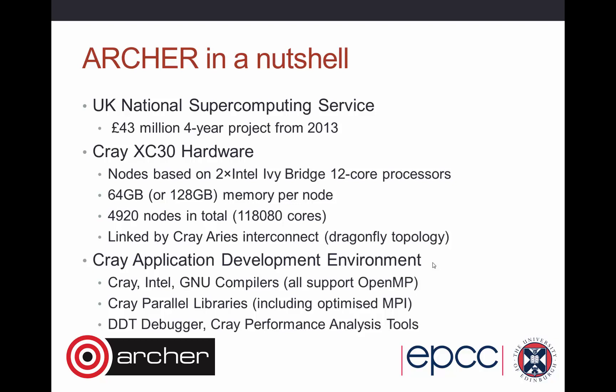In a nutshell, what is Archer? Archer is the UK National Supercomputing Service, and the hardware budget is about just over £40 million over a four-year period. The hardware is based on the Cray XC30 system. Each node is built from a couple of Intel Ivy Bridge processors, which have 12 cores each — relatively standard, high-end processors. Each node has 64 gigabytes, some have 128. In total we have almost 5,000 nodes — 4,920 — and multiplying by 24, Archer has over 118,000 individual computing cores.